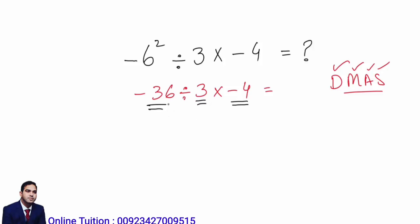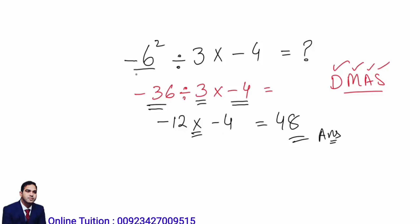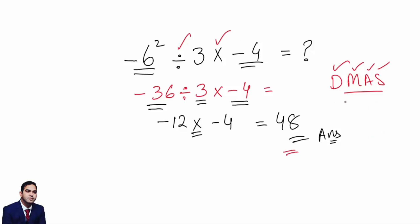So: negative 36 divided by 3 gives negative 12. Then negative 12 multiplied by negative 4 — negative times negative is positive — gives positive 48. This is the exact answer of this question. The negative signs here are part of the numbers, not operations. The only operations are the division and the multiplication. So the correct answer is 48.